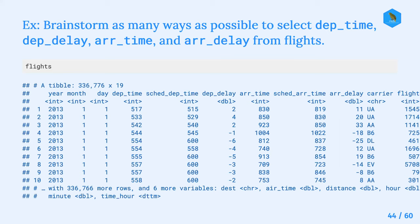This is a snapshot of the flights dataset and we can see the four different variables the exercise refers to: departure time, departure delay, arrival delay, and arrival time - all four are within view.